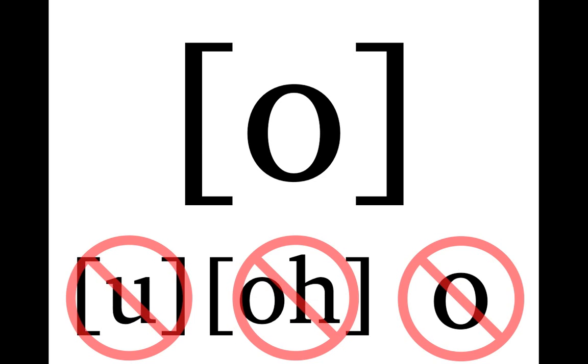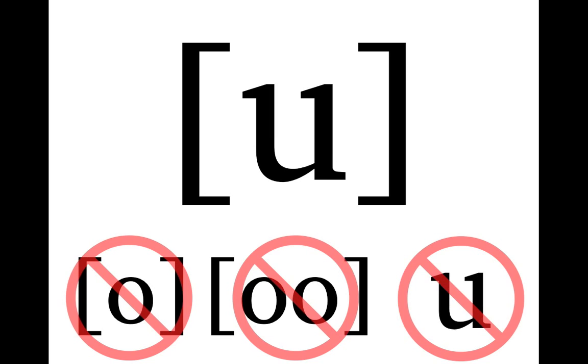Same thing for our remaining three vowel symbols. You've got to write them the correct way. Don't get them confused with any other symbol or any other letter. And definitely never forget the brackets. You've got to be very specific and very careful that you write these the correct way.